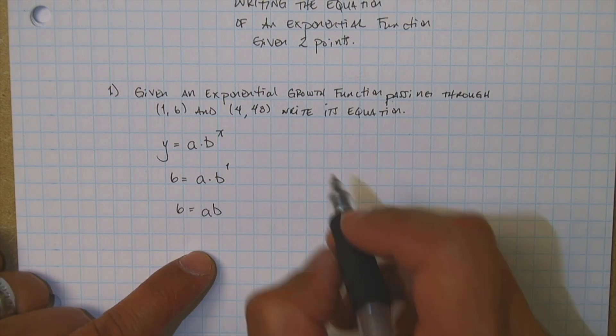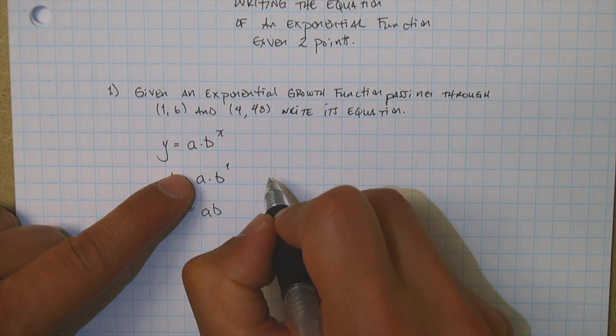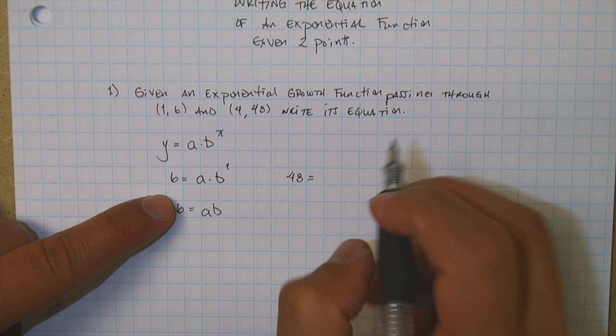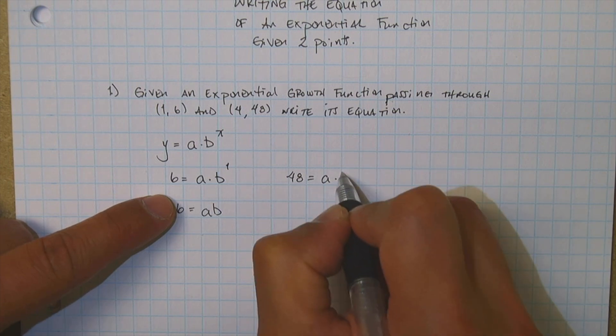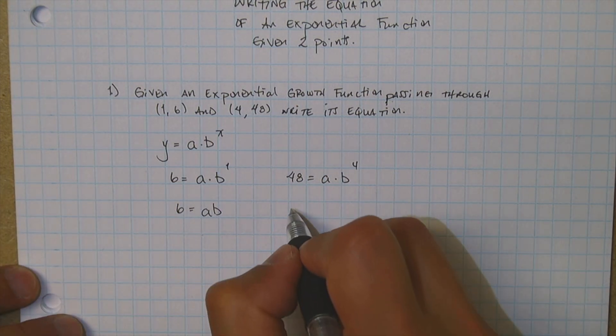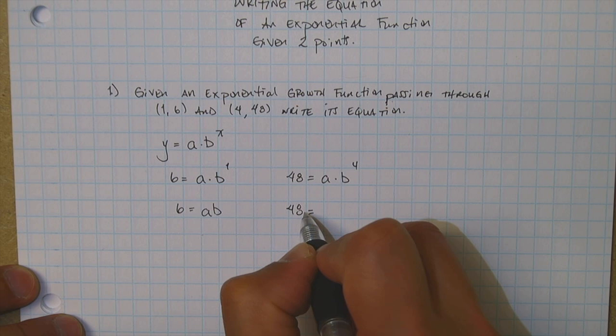And over here we're going to do the same thing, but now we're going to do it with 4. So y is 48, so we're going to get 48 is equal to a times b to the power of x, where x is 4 right there. And now we're going to get 48 is equal to ab to the fourth power.